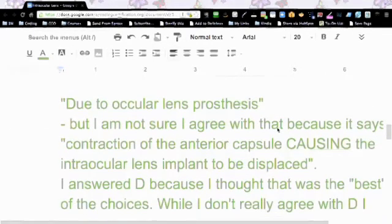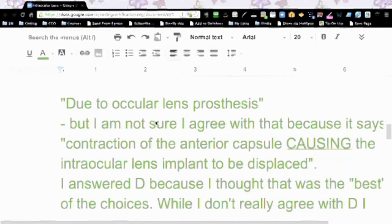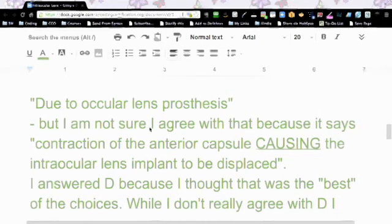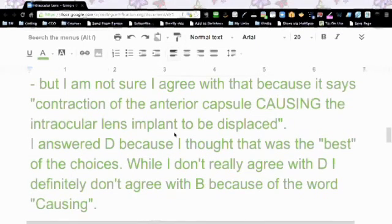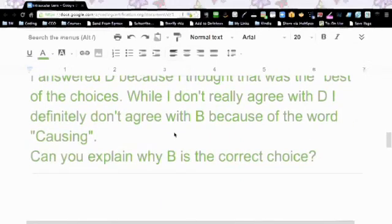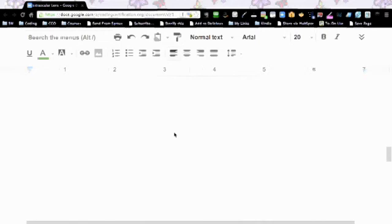So she said the answer they say is B and her comments were due to ocular lens prosthesis. But I'm not sure I agree with that because it says contraction of the anterior capsule causing the intraocular lens implant to be displaced. I answered D because I thought that was the best of the choices. While I don't really agree with D, I definitely don't agree with B because of the word causing. So a little bit of overthinking here. Can you explain why B is the correct choice?